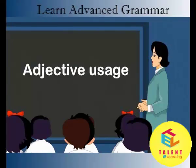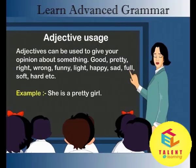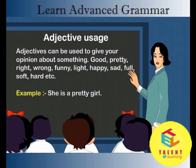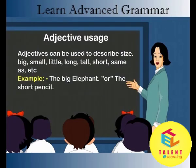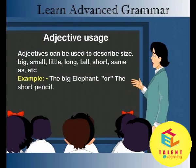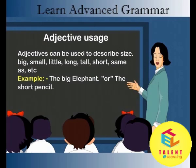Adjective usage. Adjectives can be used to give your opinion about something: good, pretty, right, wrong, funny, light, happy, sad, full, soft, hard, etc. Example: She is a pretty girl. Adjectives can be used to describe size: big, small, little, long, tall, short, same as, etc. Example: the big elephant or the short pencil.